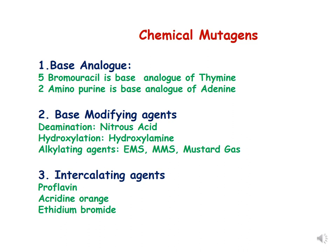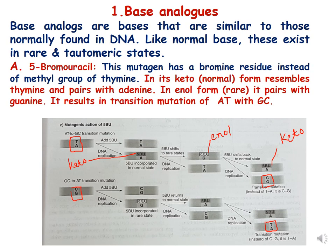The third category is intercalating agents, which intercalate or insert in between the bases and result in frameshift mutations. Examples of these agents are proflavin and acridine.